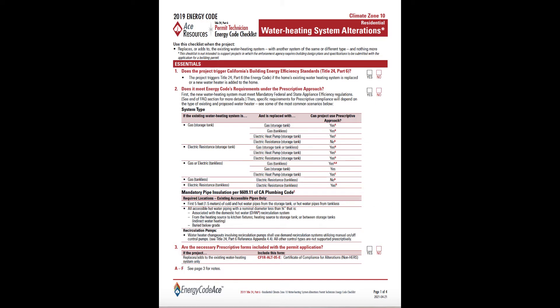In general, each checklist has four pages. Each page serves a distinct purpose, and this four-page organization is used across your set of checklists for ease of quick reference.